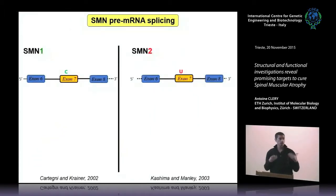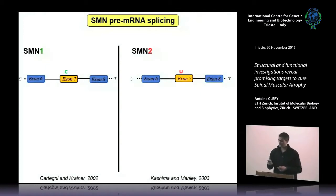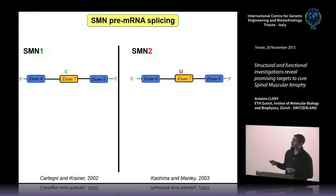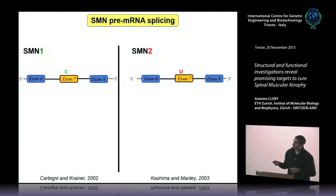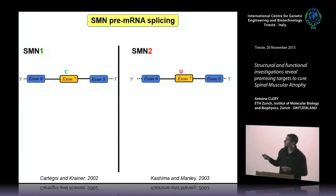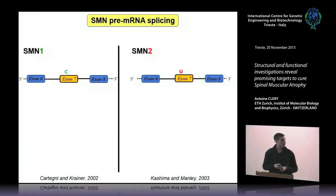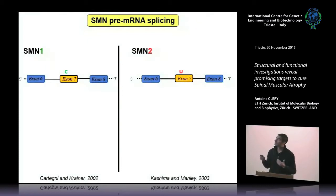The SMN protein, produced at very low levels in SMA patients' cells, is encoded by two genes: SMN1 and SMN2. The sequence of these two genes is very similar, but the main difference is the presence of a cytosine at position +6 of SMN1 exon 7, whereas in SMN2 exon 7, you have a uridine at the same position. This nucleotide change will not alter the protein sequence, but it will drastically change the splicing regulation of these two genes.